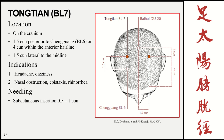Bladder 7, Tongtian, is 1.5 cun posterior to bladder 6, or 4 cun posterior to the anterior hairline. Functions are similar: headache, dizziness, nasal obstruction, epistaxis, and rhinorrhea. Insertion is exactly the same, 0.5 to 1 cun.